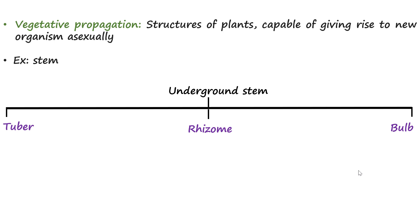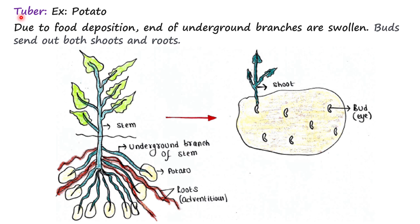Let's talk about them one by one. Tuber — the example of a tuber is potato. In this case, the main stem goes underground and generates many side branches like this.